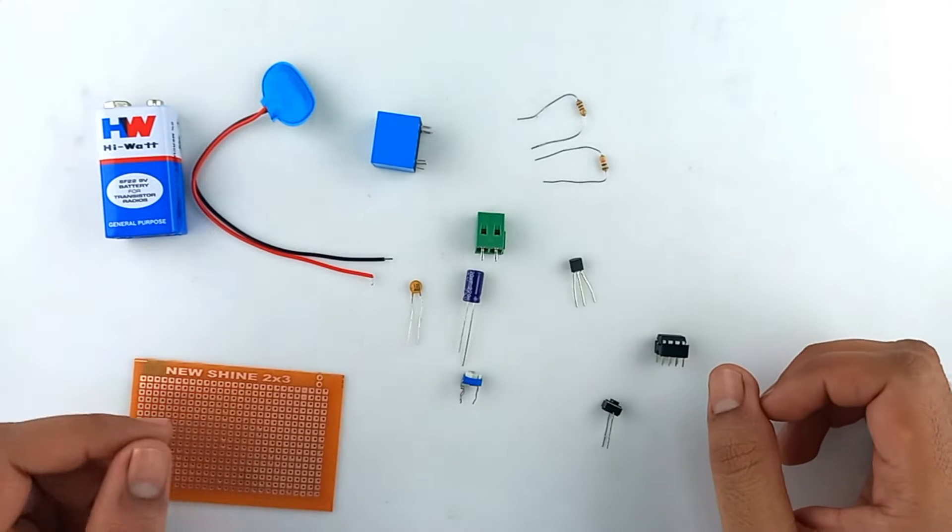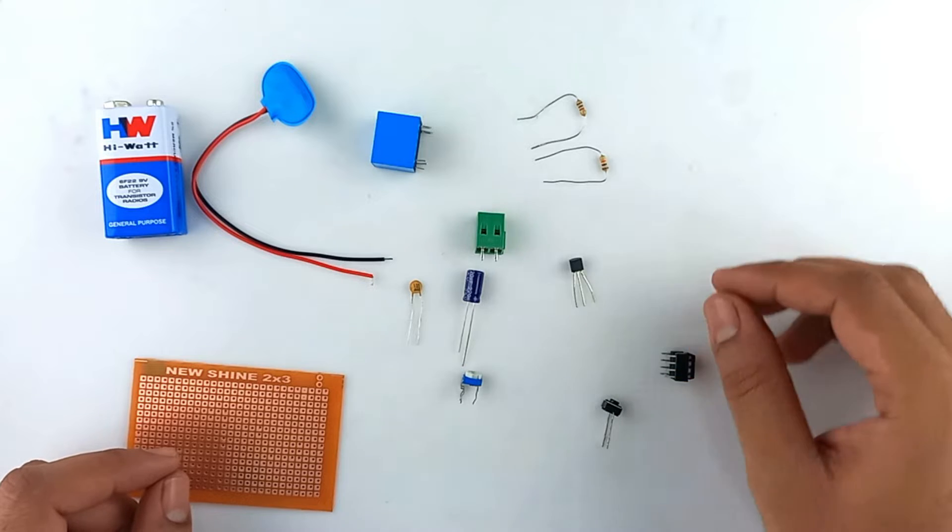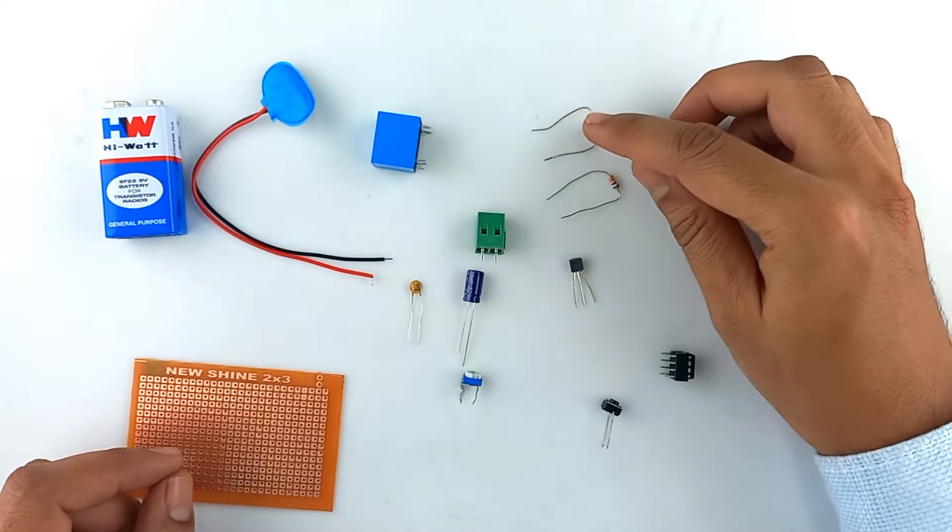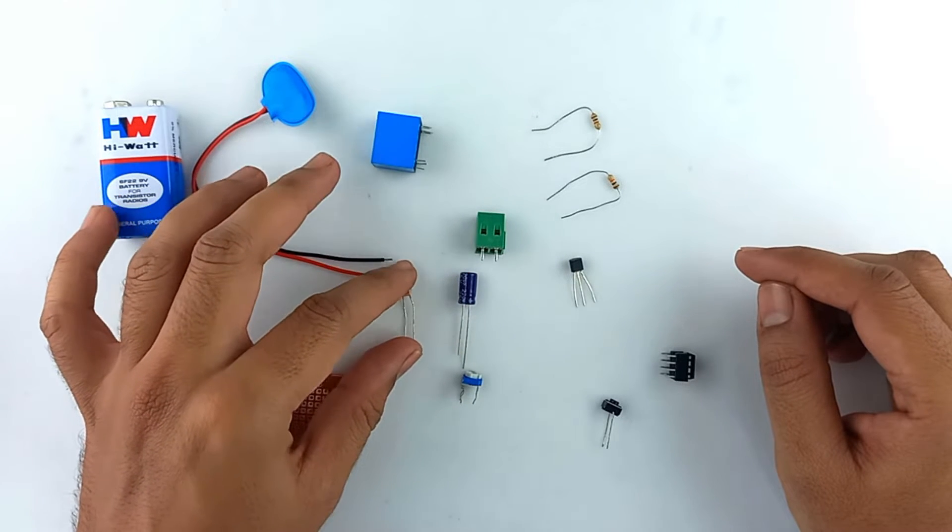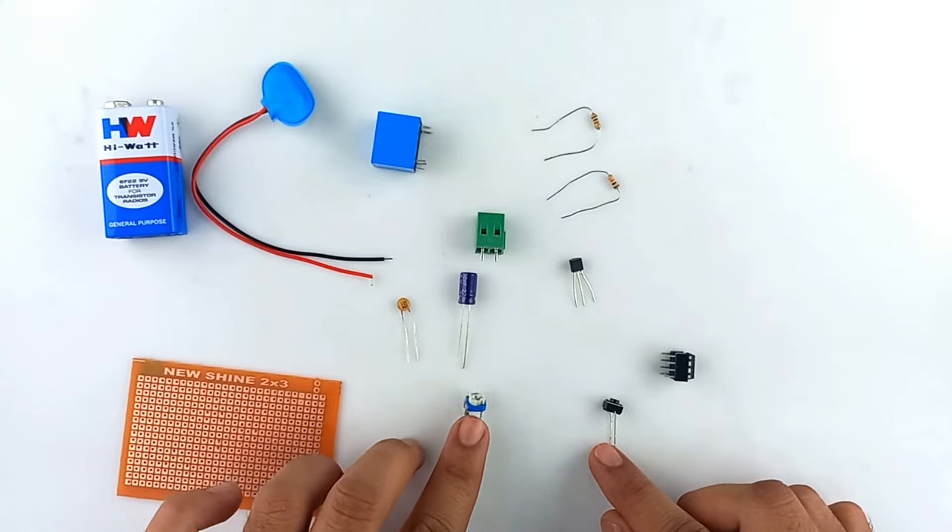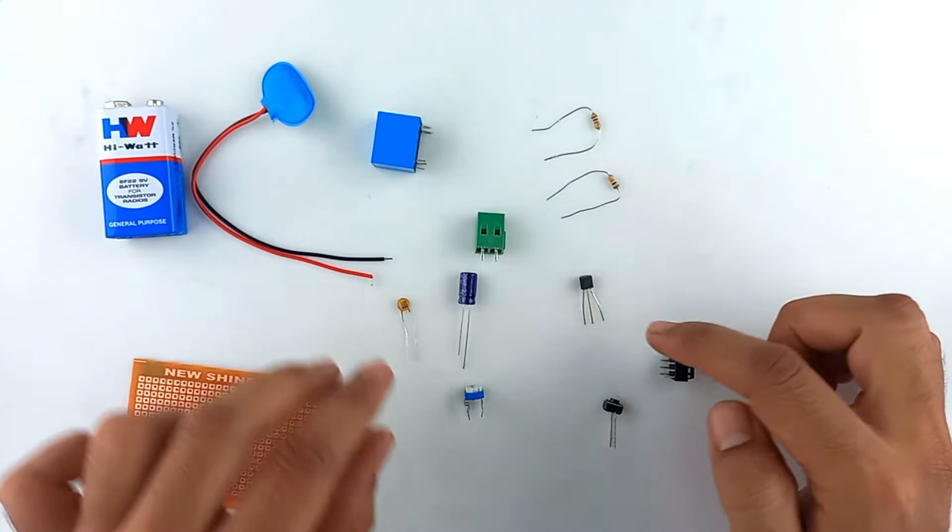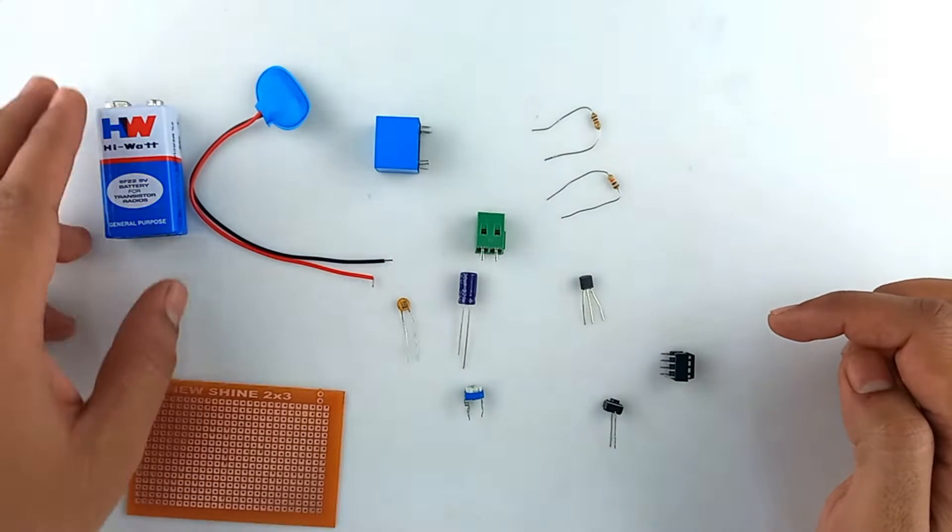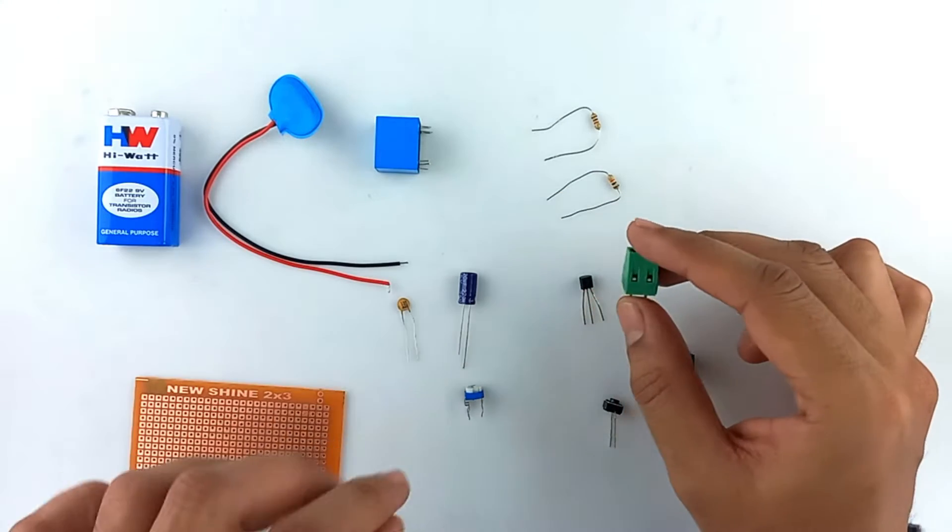For this project we will need a 555 timer IC with its socket, a 10k ohm resistor, 1 kilo ohm resistor, 200 microfarad capacitor, 100 nanofarad capacitor, one push button, one mega ohm potentiometer, BC 547 NPN transistor, 5 volt relay, a perfboard, 9 volt battery with its battery holder, and one connecting PCB terminal.